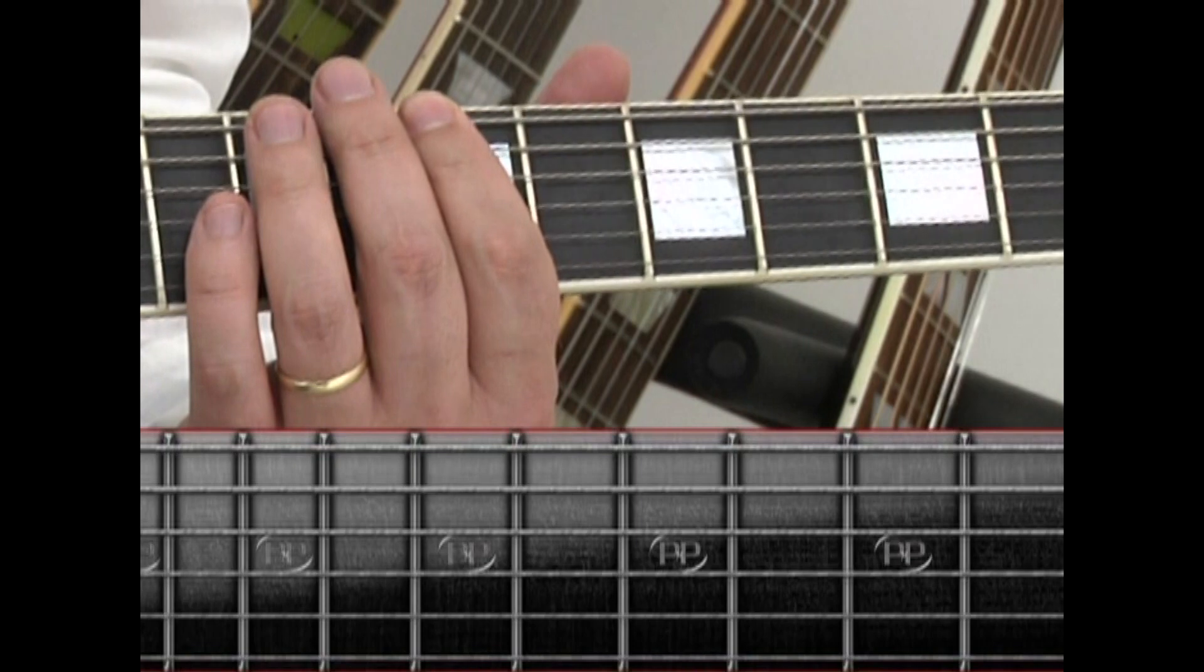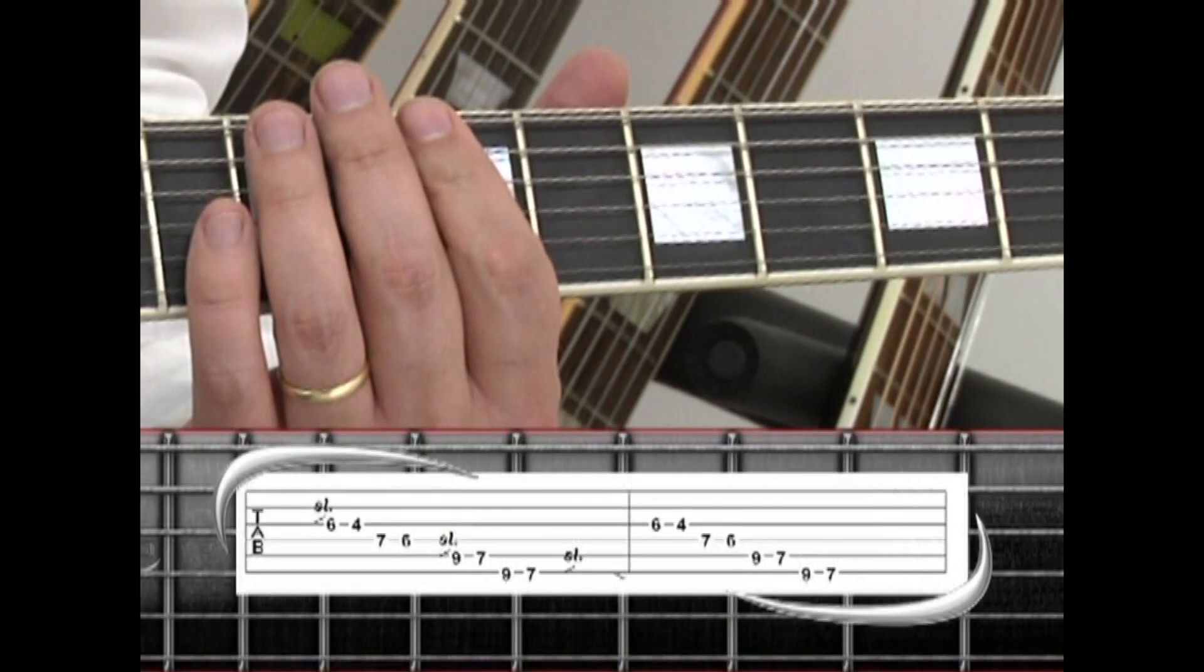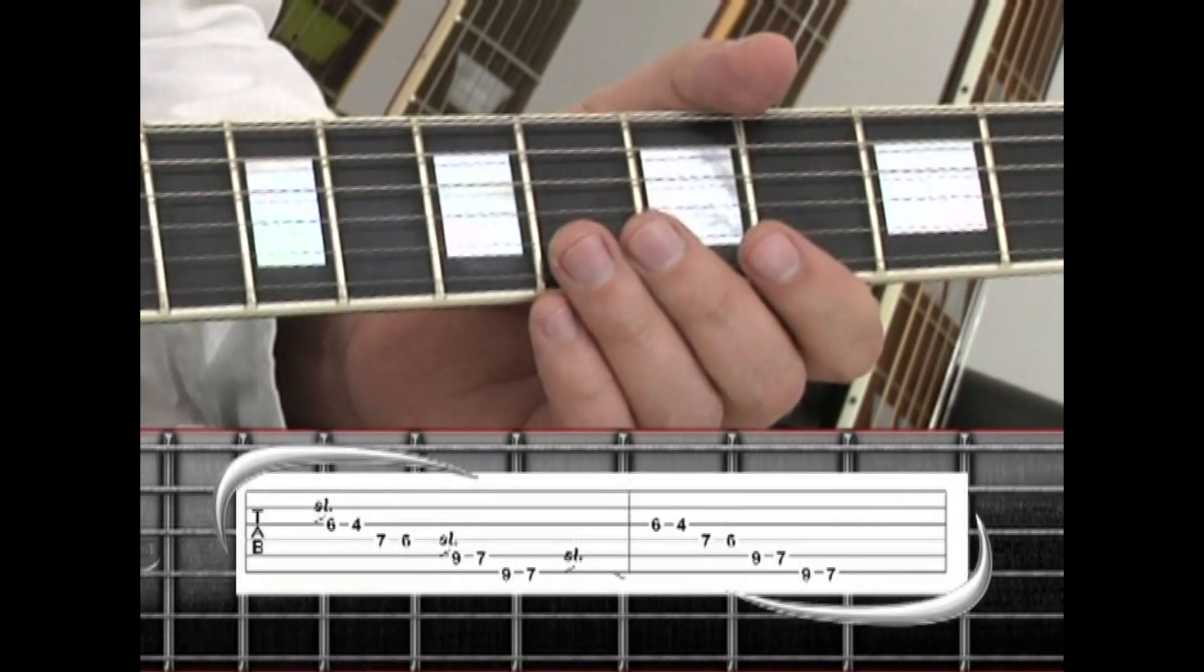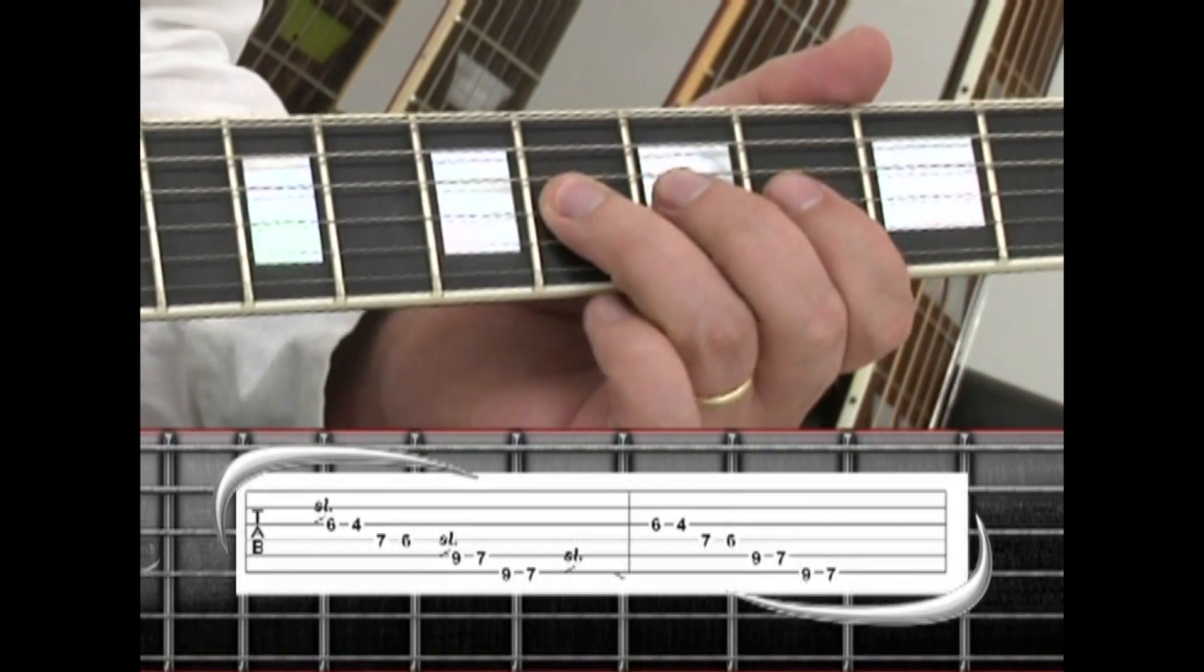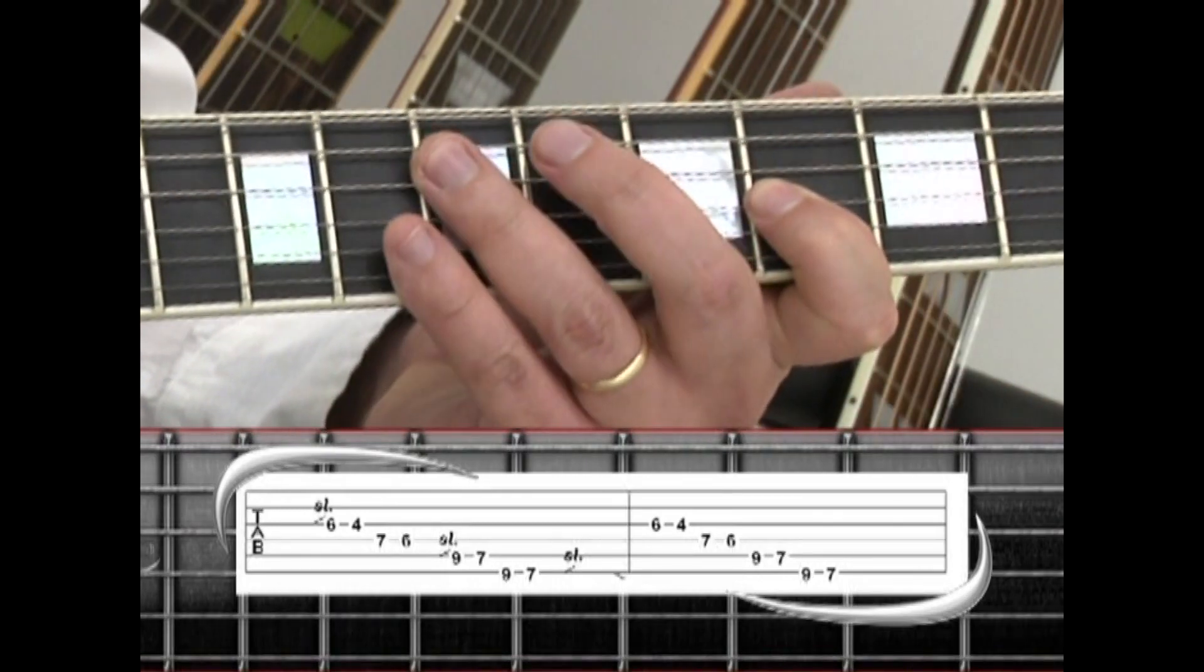During the solo breaks, Phrase 15 starts off a lead fill that is played on the 3rd string sliding up to the 6th fret with the ring, to 4, stretch up to the 4th string 7.